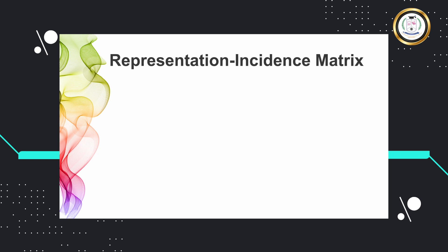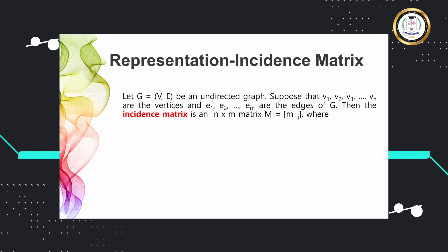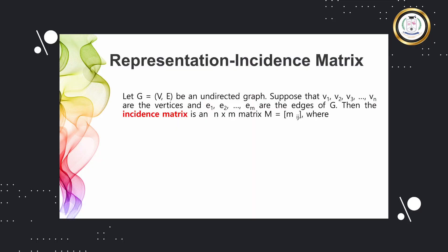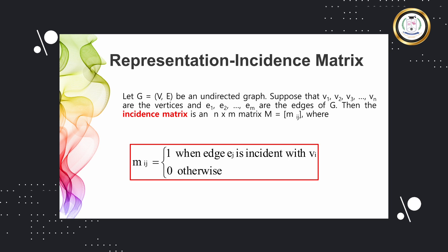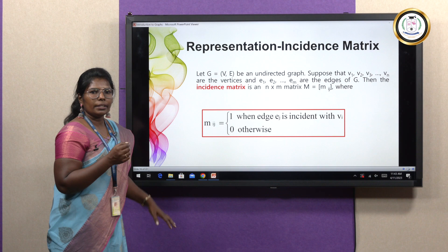Now, how do we represent graphs using matrices? If we have an undirected graph G with n vertices V1, V2, ..., Vn and m edges E1, E2, ..., Em, then the incidence matrix is an n by m matrix. We construct the matrix by putting 1 when an edge is incident with a vertex, and 0 when it is not incident.